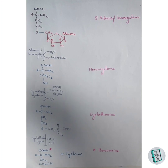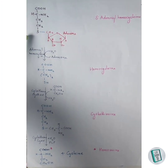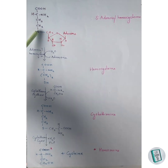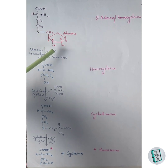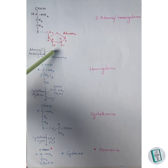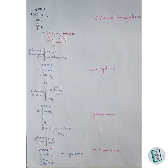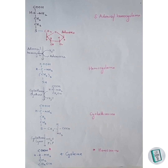In the third step, S-adenosylhomocysteine is hydrolyzed by adenosylhomocysteinase. The bond between sulfur and CH₂ is broken; a hydrogen from water attaches to the sulfur and the hydroxyl group from water attaches to the CH₂, resulting in the formation of homocysteine and adenosine.